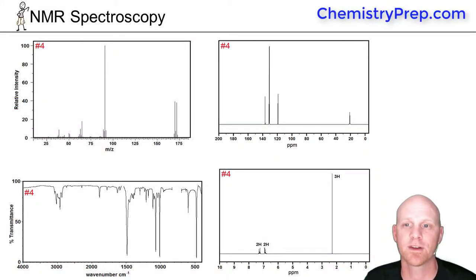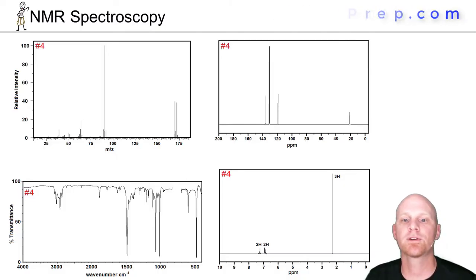So now is where the real fun begins. Here I'm giving you a couple of compounds with all four spectra: the mass spectrum, the infrared spectrum, and both the carbon-13 and proton NMR spectrums. I highly recommend you go through them in the order that I've given them.